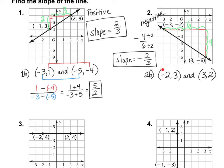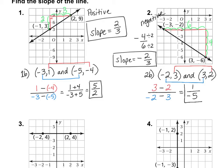Let's take a look at 2B. We have the points negative 2, 3 and 3, 2. Write the skeleton of the formula first. Y numbers on top: 3 minus 2. X numbers on the bottom: negative 2 minus positive 3. Simplifying: 3 minus 2 is 1, and negative 2 minus 3 is negative 5. So the slope is 1 over negative 5.